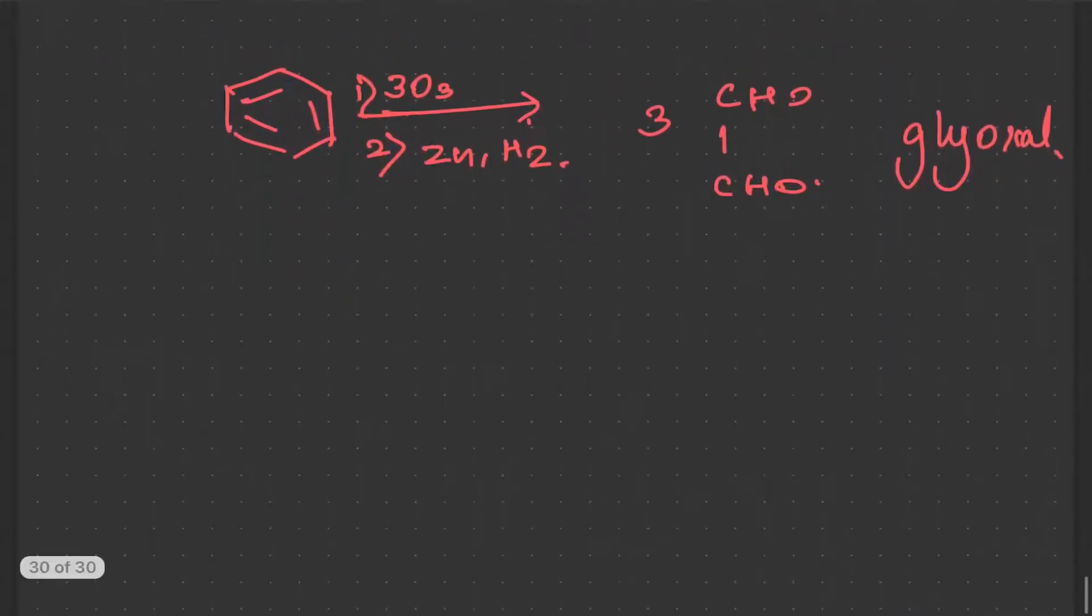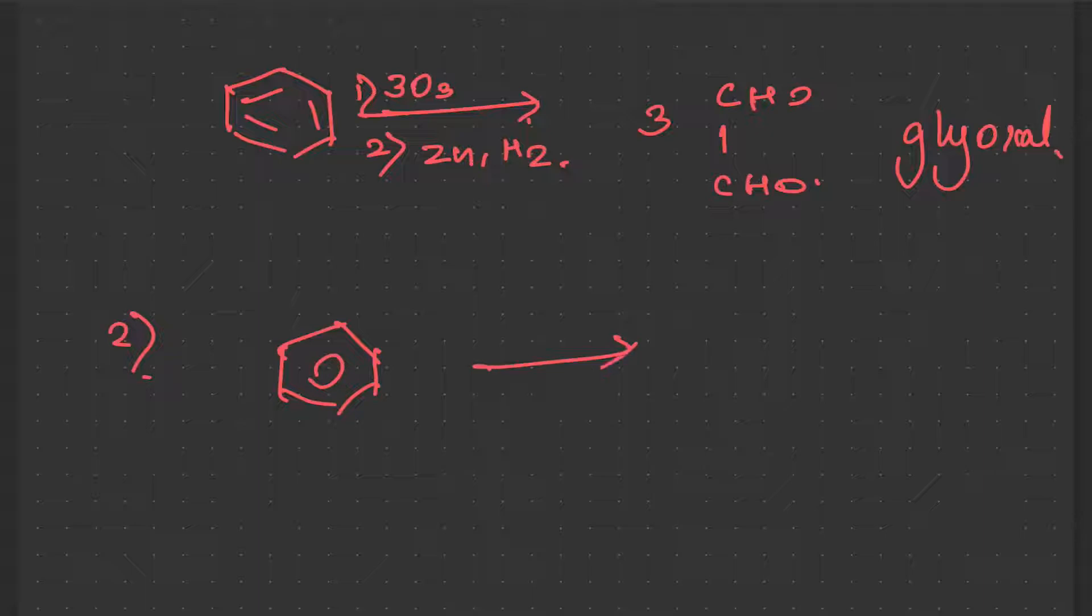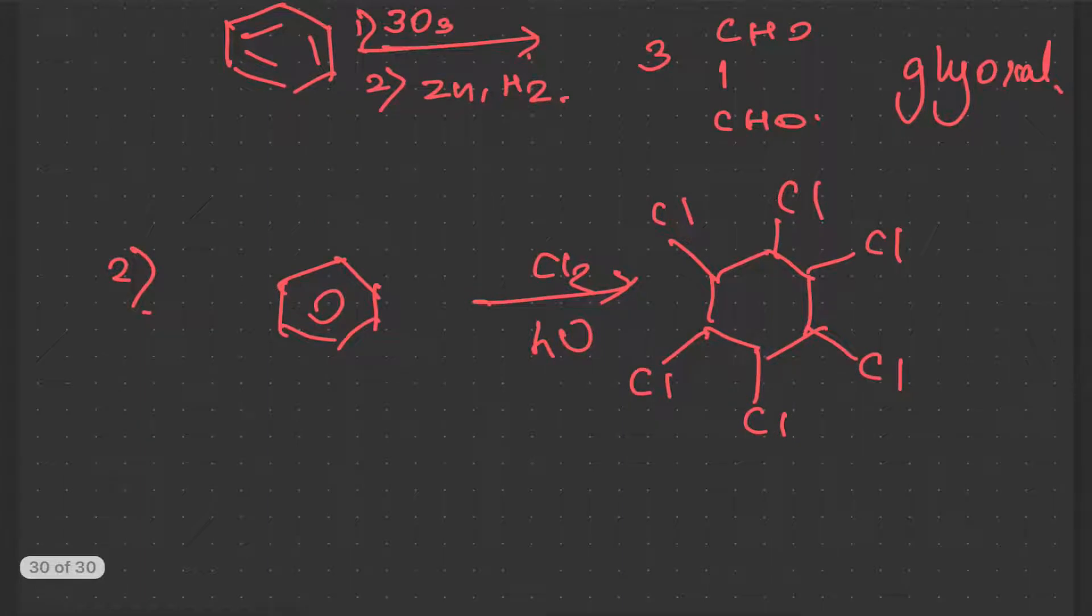In contrast to the halogenation monohalogenation that we studied, let us study these reactions. Cl2 in presence of light, what happens to this? We get this due to free radical substitution. Due to the free radical mechanism of substitution, the H will be there only, so we get C6H6Cl6.